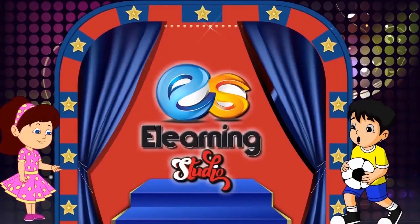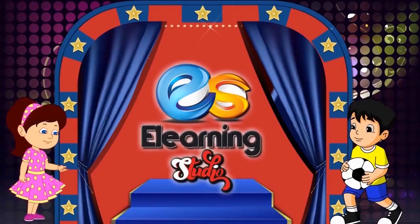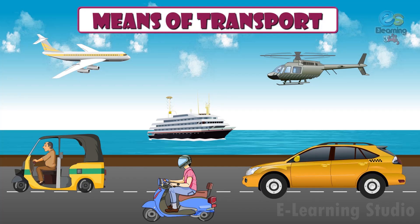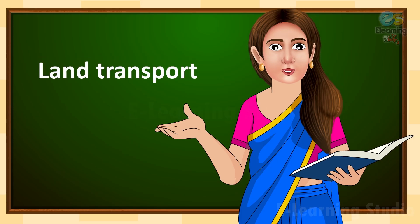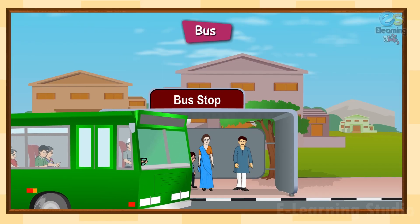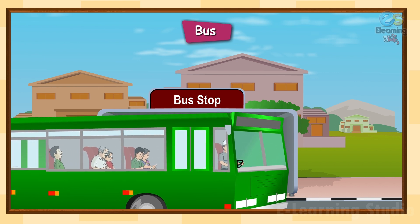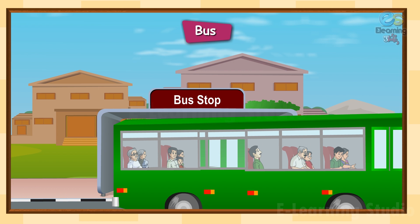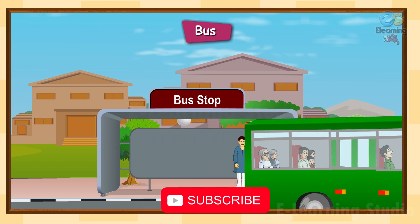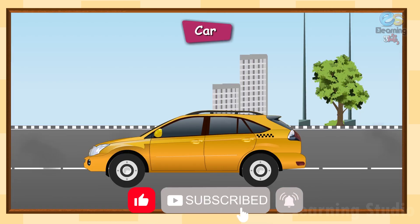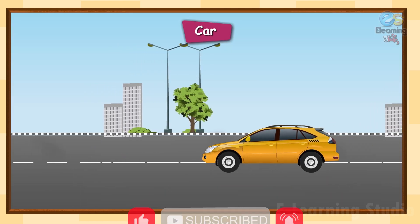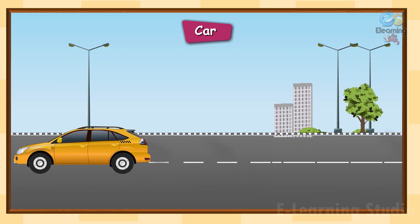E-learning Studio. Means of Transport. Land transport moves on land. Bus: this is a bus. It carries passengers from one place to another. A bus also takes you to your school.